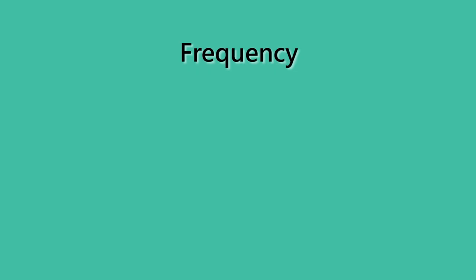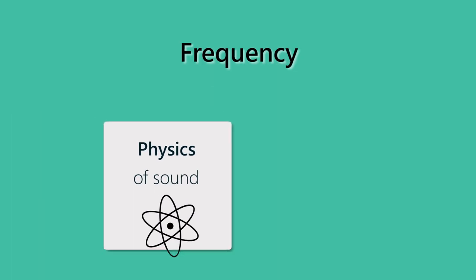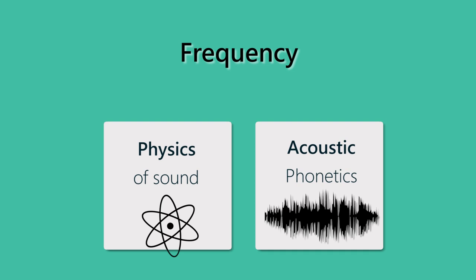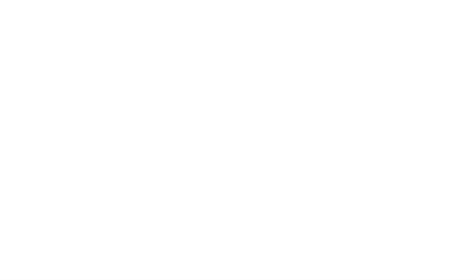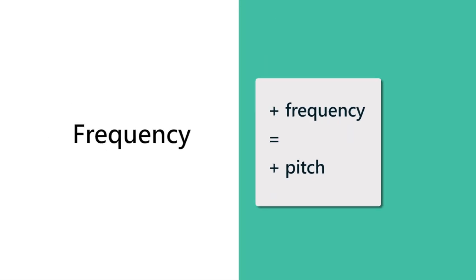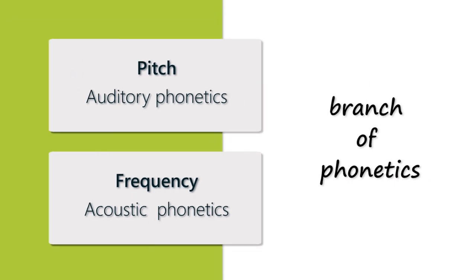The term frequency is used in the study of the physics of sound, and also in acoustic phonetics, which is the sub-branch of phonetics that analyzes sounds objectively and which is the closest sub-branch to the physics of sound. An increase in the frequency of a sound correlates with the auditory sensation of a higher pitch. You could say frequency is acoustic phonetics; pitch is auditory phonetics.